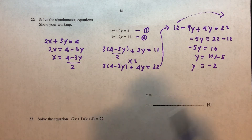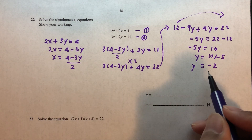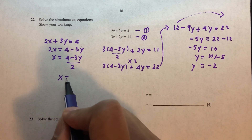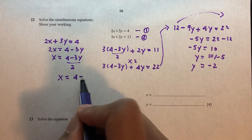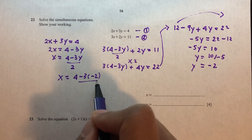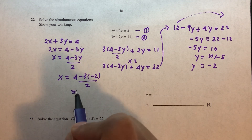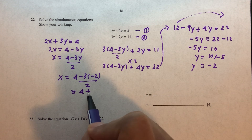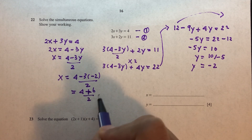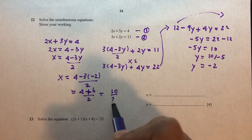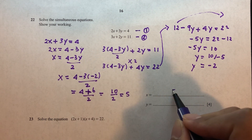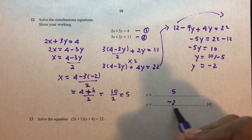Now substituting y = -2 back to find x: x = (4 - 3(-2)) / 2 = (4 + 6) / 2 = 10 / 2 = 5. So x = 5 and y = -2.